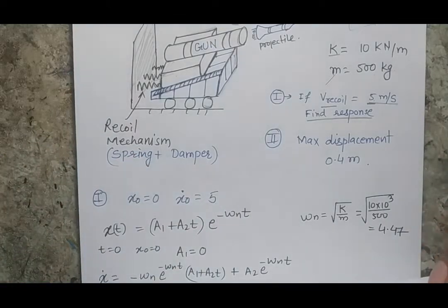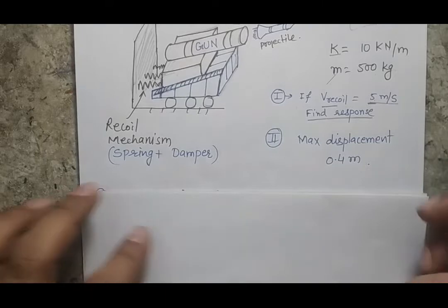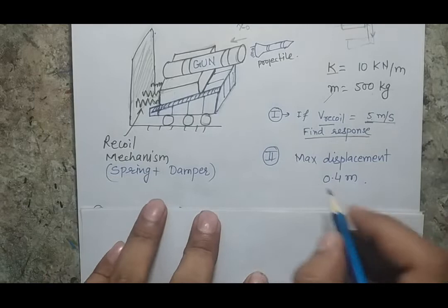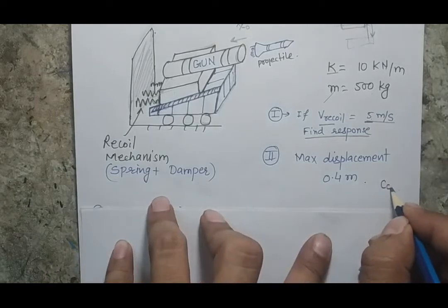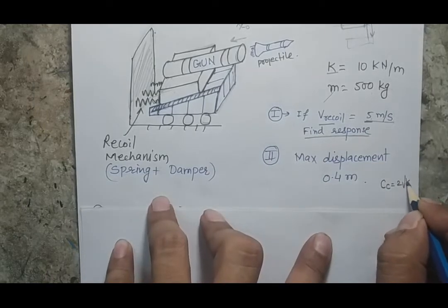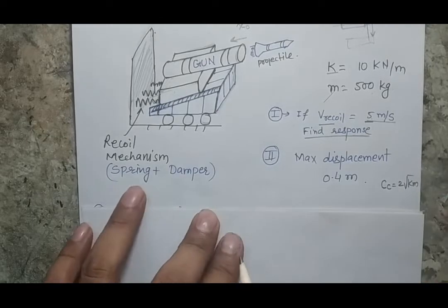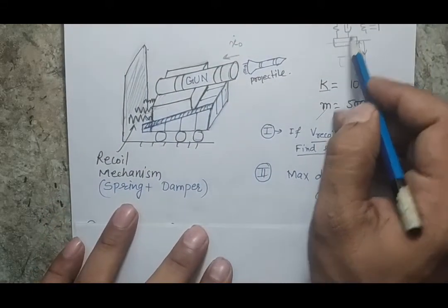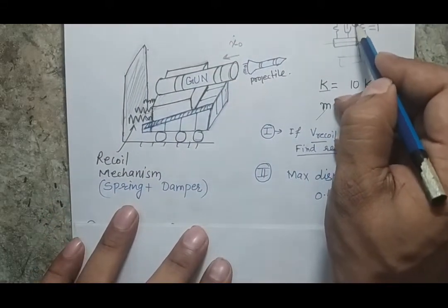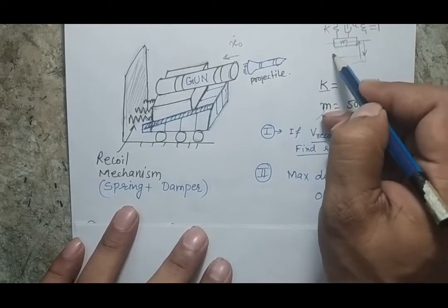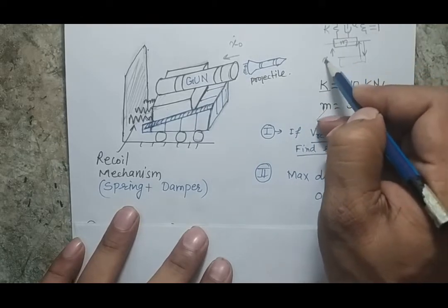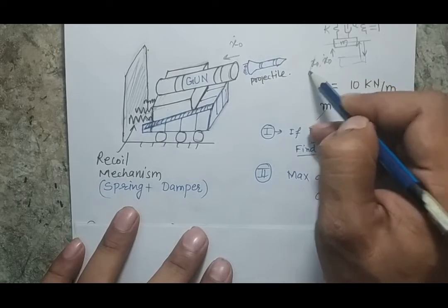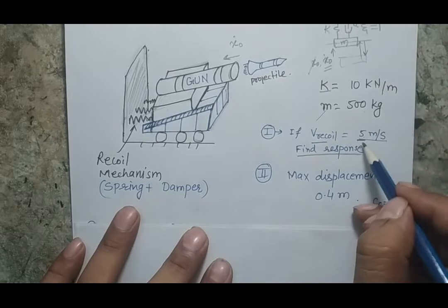You have to find the response of the system. The system is critically damped, meaning the damping C equals CC, which is 2 times the square root of KM. The mathematical model will have C equal to CC, with stiffness K and mass M, and an initial velocity of 5 meters per second with initial displacement equal to zero.